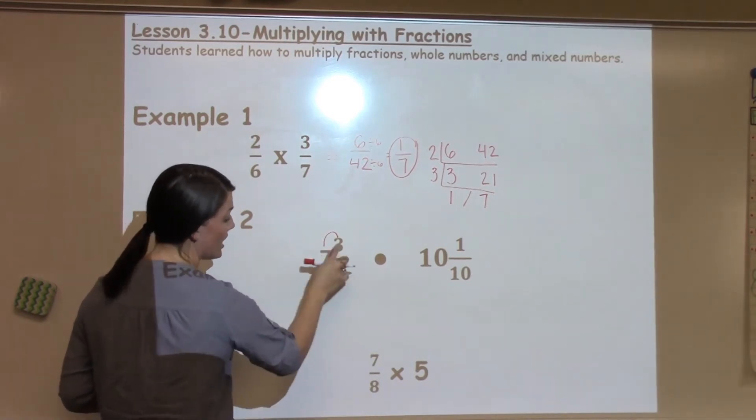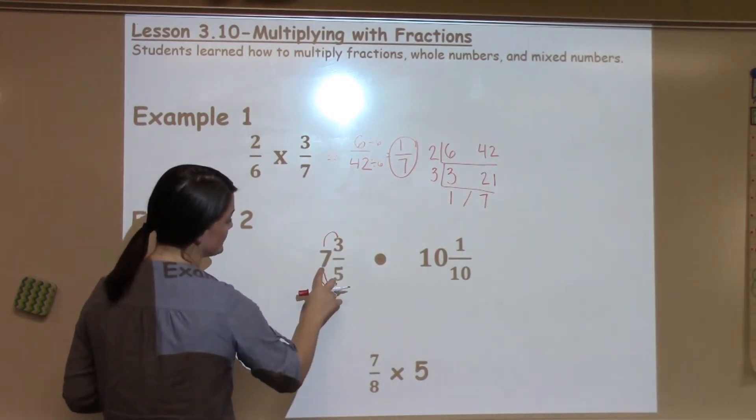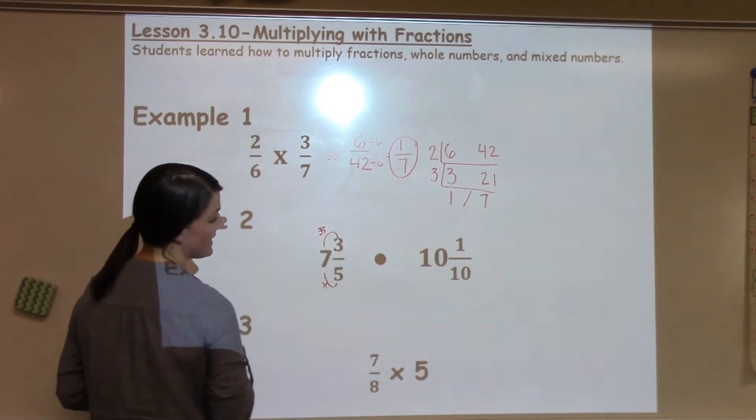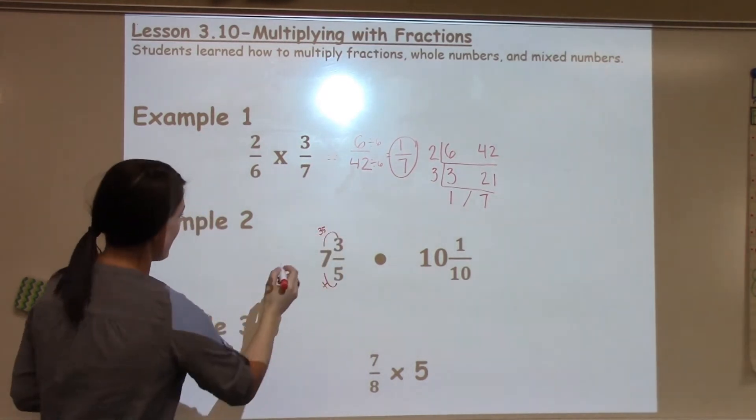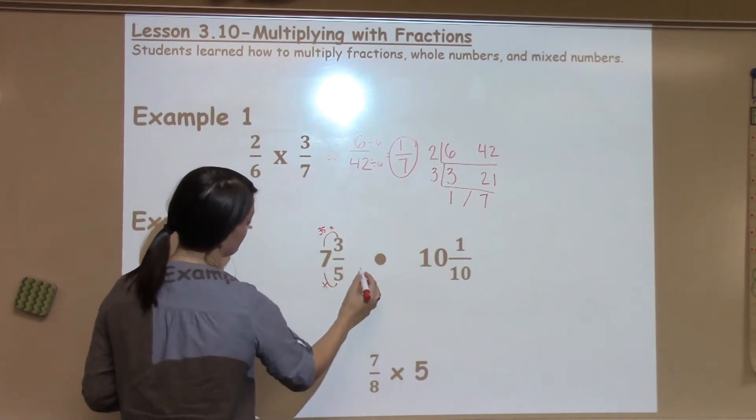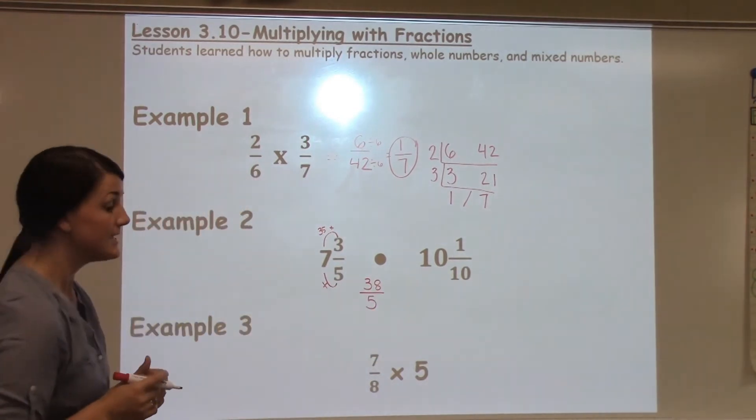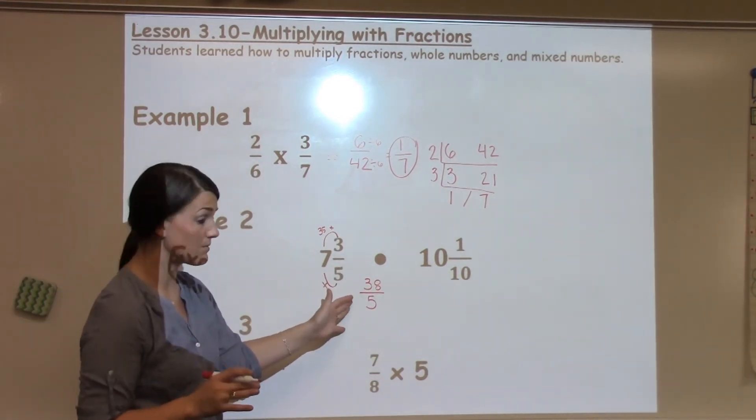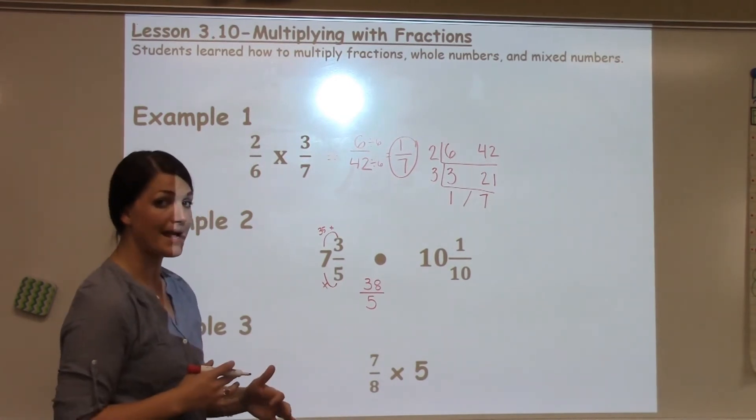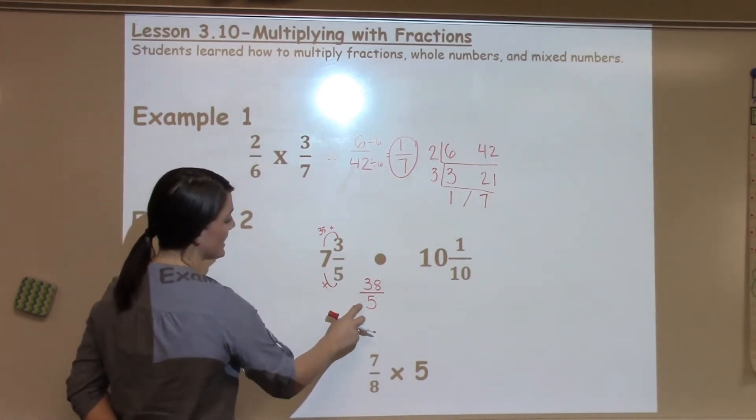You multiply the denominator and the whole number, then you add on the numerator. So 5 times 7 is 35. I like to write it up top so I don't forget. And then I do 35 plus 3 for a new fraction of 38. Denominator stays the same, so 38/5. Now this is improper, you are right. But we will flip it back again at the end. So 38/5.